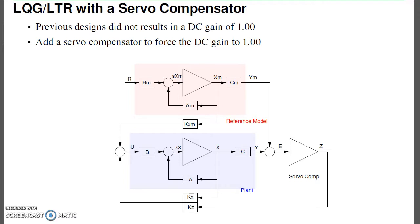What I could do is use the servo compensator. What servo compensators do is they force the DC gain to 1. So what I'd like to do in this lecture is exactly that. Let's add a servo compensator to my LQG-LTR method to force at steady state at DC, to force my plant to track the steady state output of the reference model.